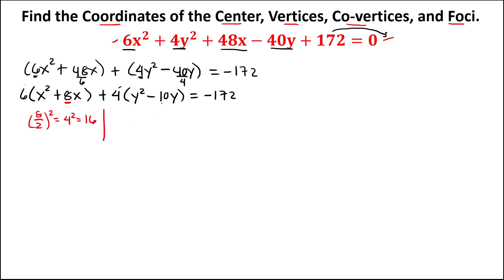For y, take 10, divide by 2 to get 5, then square it: 5² = 25. So the completing-the-square value for y is 25.